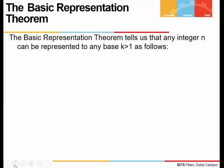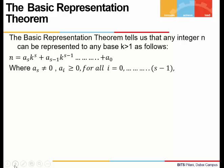The Basic Representation Theorem says that any integer n can be represented to any base k, where k is greater than 1, as follows: n is equal to a_s times k to the power s, plus a_{s-1} times k to the power s-1, going up to a_0. This means n has been written as a sum of powers of the base k.